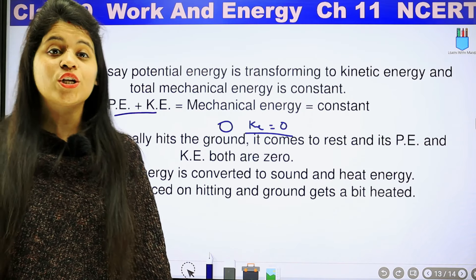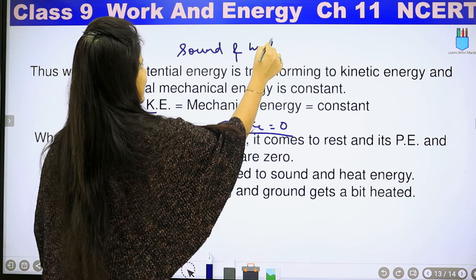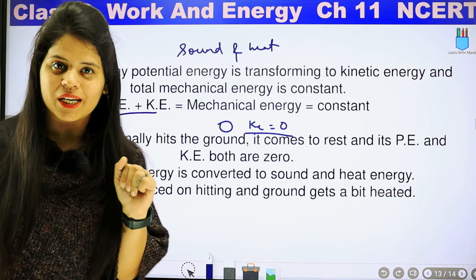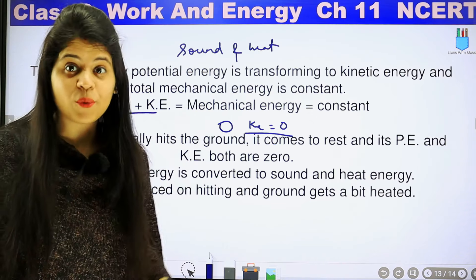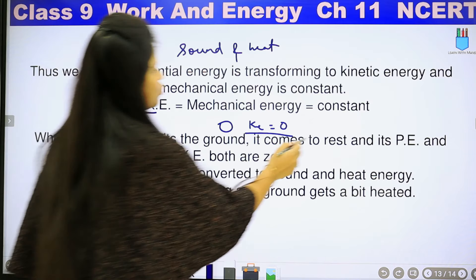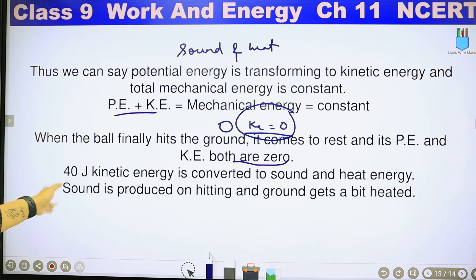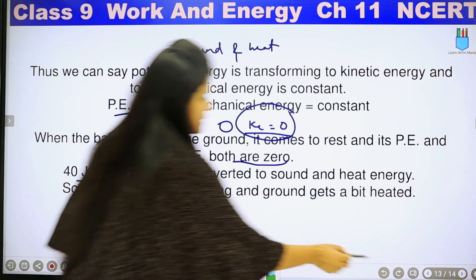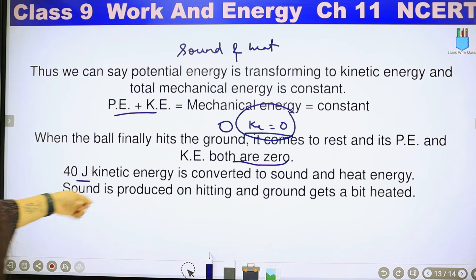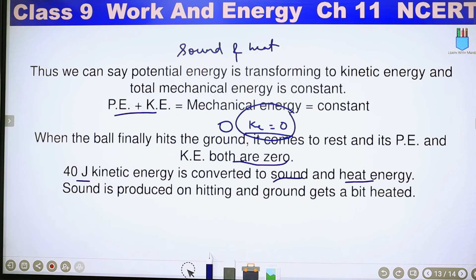So here the kinetic energy will also be zero. Energy can't be destroyed, so now it will be converted into sound and heat energy. When it hits the ground, the ground gets a little warm and sound is produced. So the 40 joules of potential energy was converted to 40 joules of kinetic energy, and now this kinetic energy is converted to sound and heat energy — sound is produced on hitting and the ground gets a bit heated.